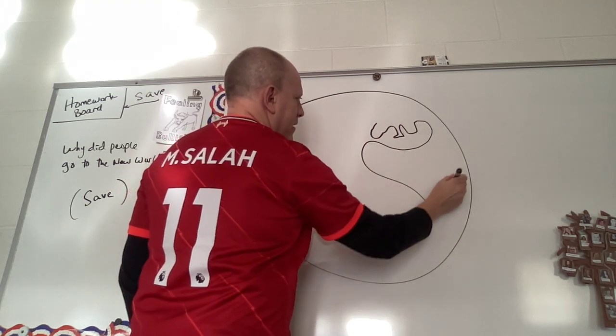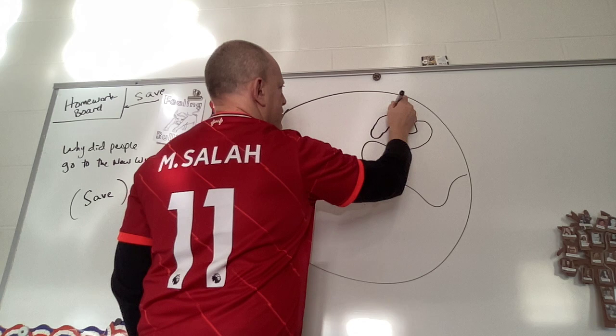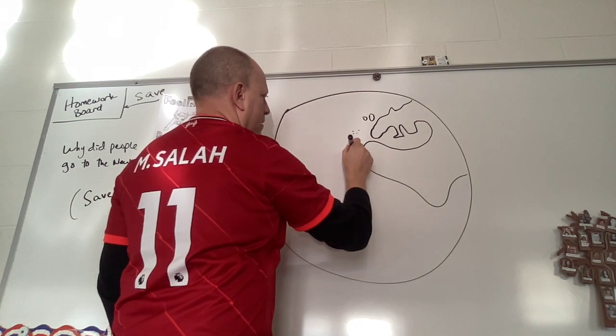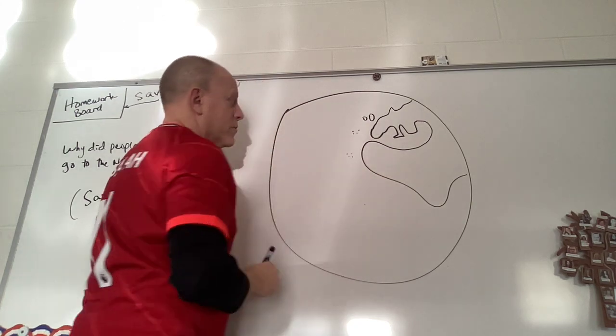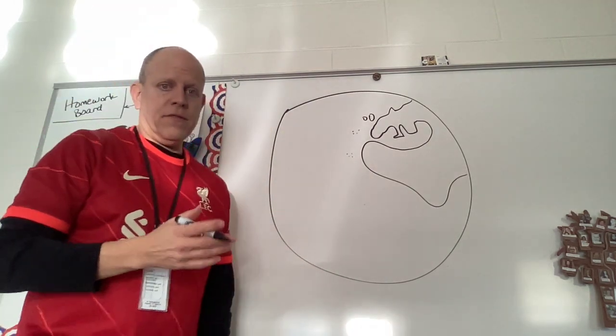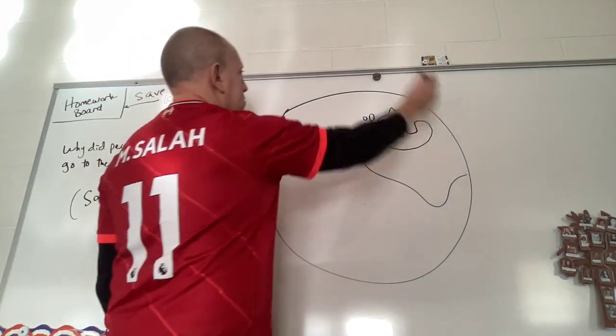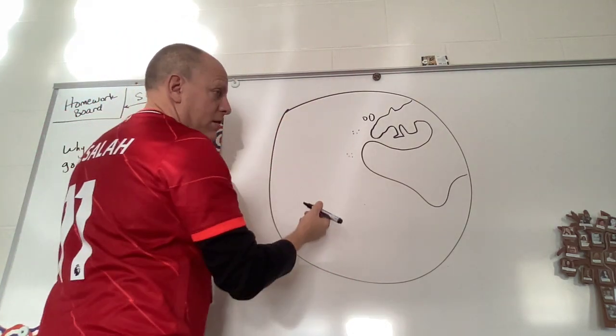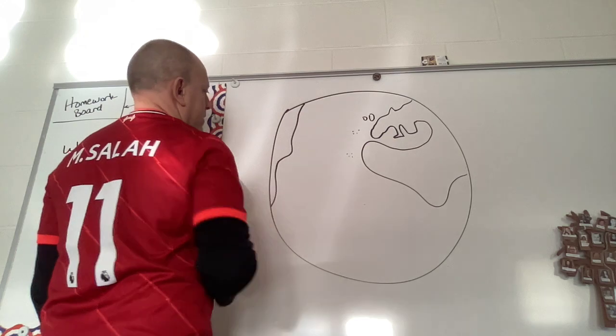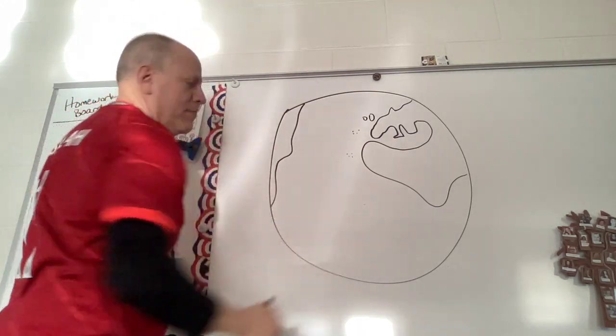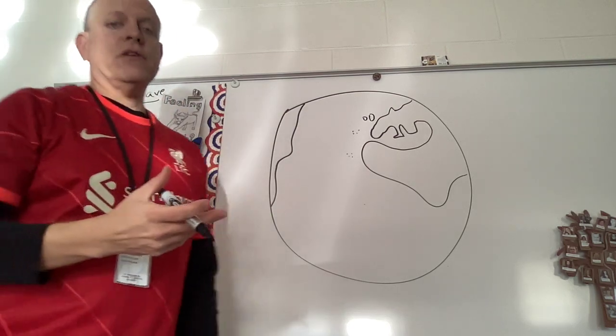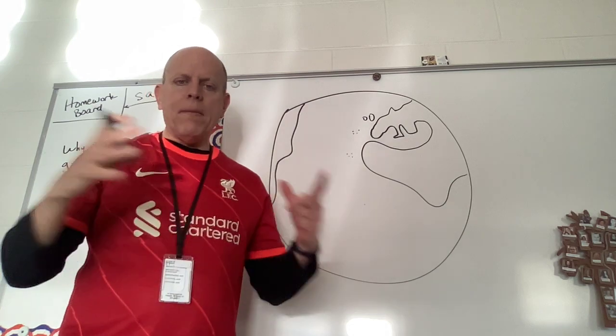We're gonna have Africa here. There's Denmark all the way up. Great Britain, Ireland. We have some islands here. Boy, that Africa looks really bad, doesn't it? And then remember, they thought the world was a lot smaller than what we know it is. So most of that's gonna be Asia on the other side and mainly land world too, which it's not. It's the opposite.